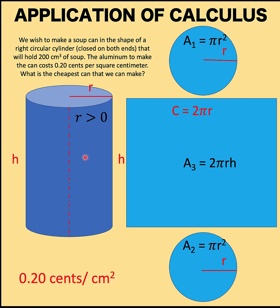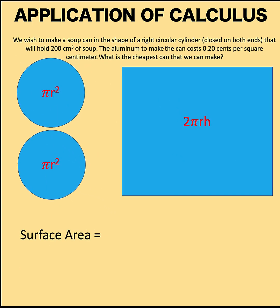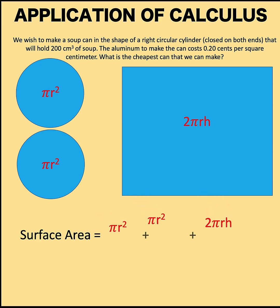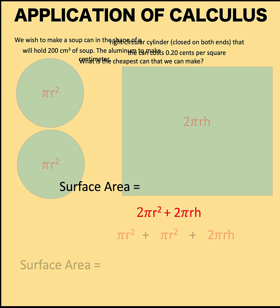According to the problem, each square centimeter of the aluminum material that is to be used for creating the can costs 0.20 cents. And our goal in this problem is to find what is the cheapest possible can that we can make. In other words, this is a minimization problem and calculus is good at solving problems like this. So, let's focus first on the total surface area and that is equal to 2πr² + 2πrh. Let's remember this result.